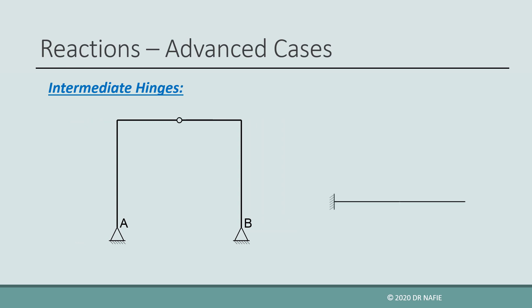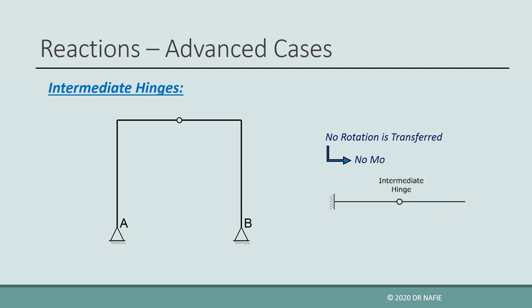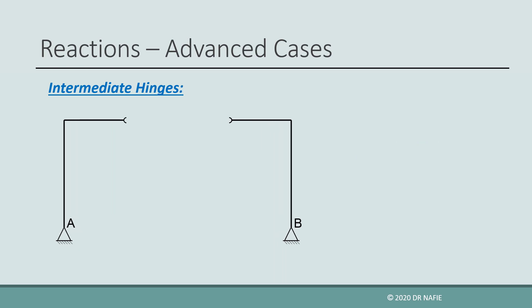If an intermediate hinge is inserted at a point, the rotation on one side of the point will not be transferred to the other side across the hinge. And if rotation cannot be transferred across the hinge, then moment cannot be transferred as well. This means that if we cut the structure at the hinge location, only two internal forces will appear, and the internal moment will be equal to zero. The fact that internal moment at the hinge is always equal to zero gives us an additional equilibrium equation that can be used to solve complex problems.